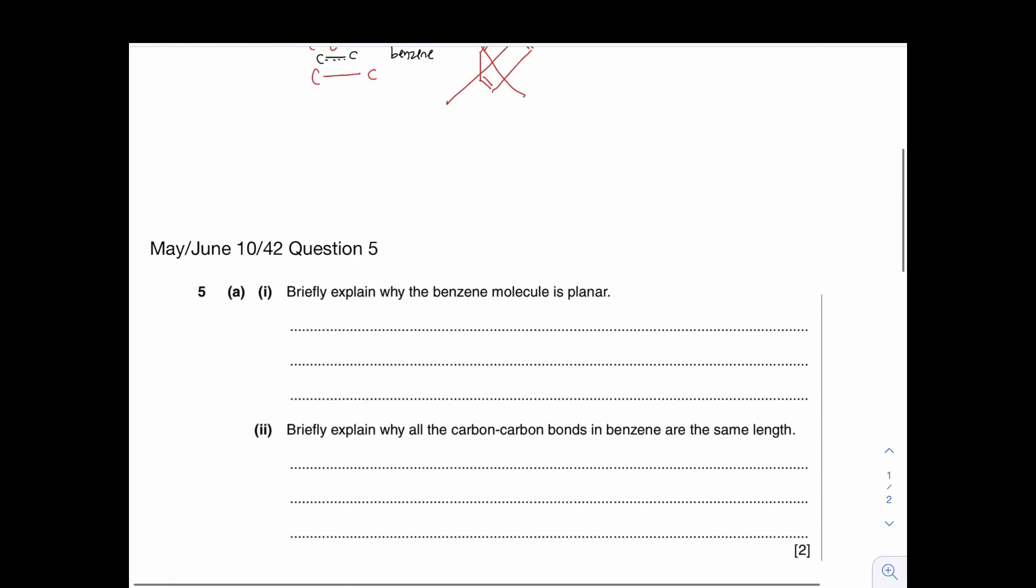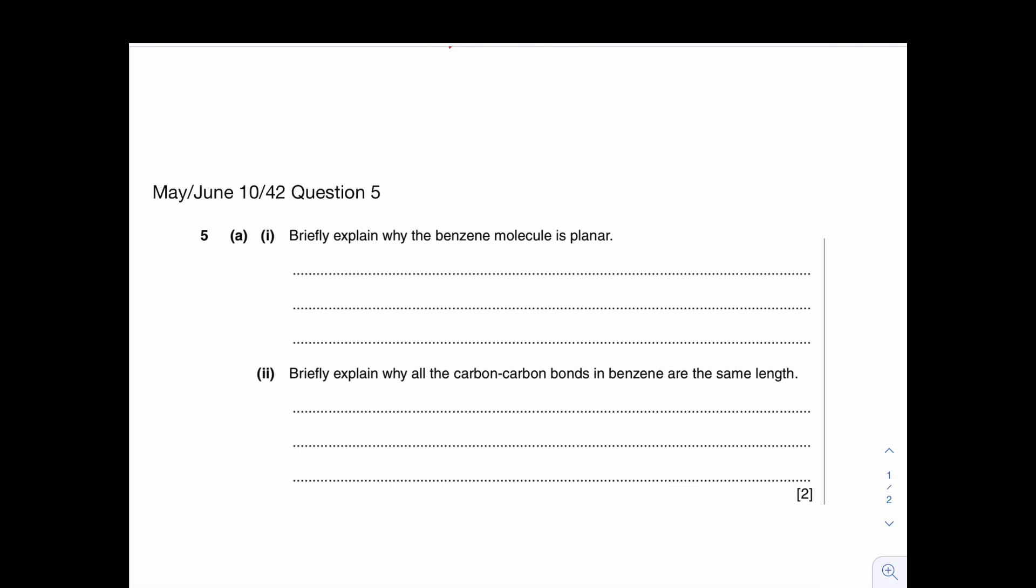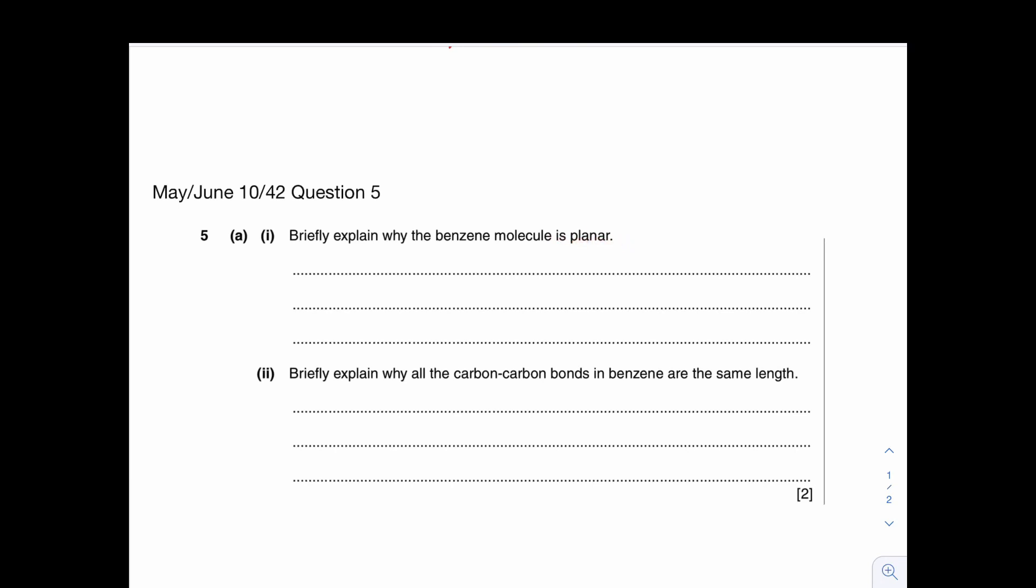Now, let's look at these questions. So this question is in May June 1042, question 5. Question 5A1 briefly explain why the benzene molecule is planar. Planar means to say that they would like you to explain why the benzene molecule is in two-dimension because planar means two-dimension, 2D structure.